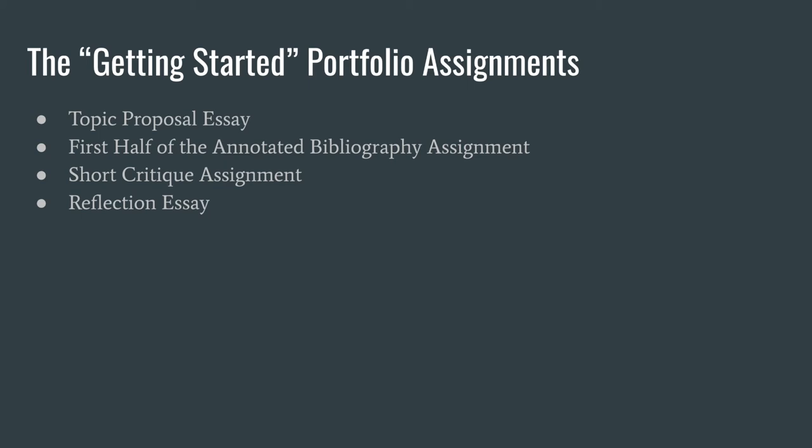So think carefully about what you decide to be your topic. The annotated bibliography is about starting to gather your research in different ways. The short critique assignment is where you'll do a deeper dive into one of those pieces of research. And the last element, the reflection essay, is where you'll explain to me and your classmates what happened in the process as you worked through these assignments.